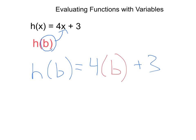plus 3. Now, since that's a variable, we can't really simplify, and our final answer is just 4b + 3. So the same exact thing, just plugging in a variable rather than a number.